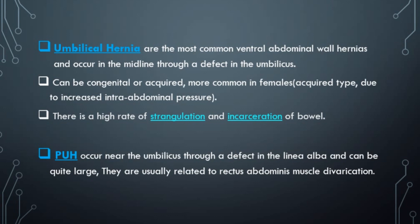Umbilical hernias are due to a defect in the umbilicus. They're common in children and sometimes resolve spontaneously — we give them a chance after two years. In adults, they're more common in females due to increased abdominal pressure from pregnancy or other causes. There is a high rate of strangulation and incarceration with umbilical hernias. Para-umbilical hernias occur either above or below the umbilicus through a defect in the linea alba and can be quite large, usually related to rectus abdominis muscle or prior abdominal surgery.